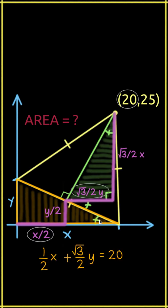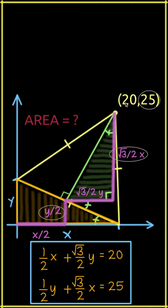Finally, we can write the sum of the two zigs as 20, the x coordinate, and the sum of the two zags as 25, the y coordinate. Now we're getting somewhere.